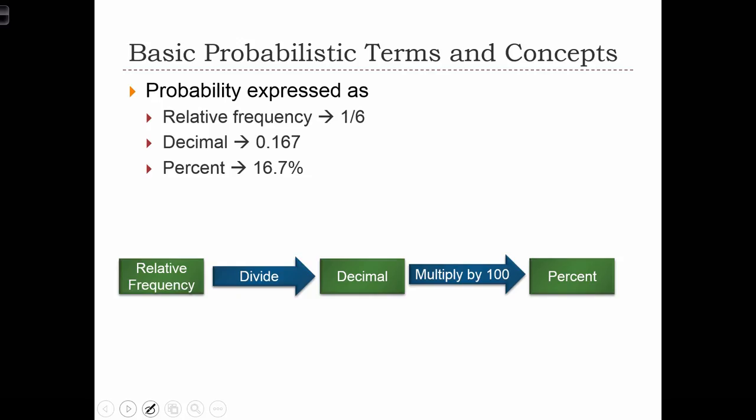Now, probability can be expressed either as a relative frequency, like a ratio, as we've seen before, one out of six, or three out of six. But this is the same thing as expressing the probability as a decimal or a percent. In order to move from a relative frequency to a decimal, we simply divide the numerator by the denominator. So to move from one-sixth to 0.167, we would calculate in our calculator one divided by six.